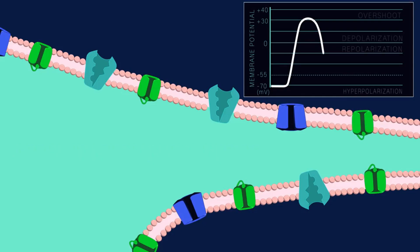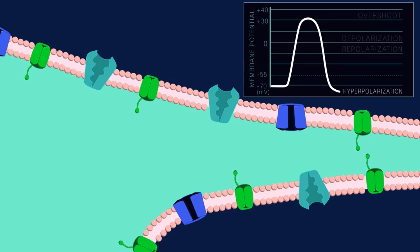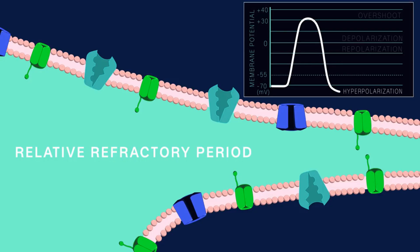During hyperpolarization, the sodium channels are closed and the inactivation gate opens. There is no change in sodium flow, but now they could be opened again. This is called the relative refractory period, because while the sodium channels could open, it would take a larger than usual stimulus to reach threshold — because the cell is hyperpolarized due to potassium still leaving the cell.